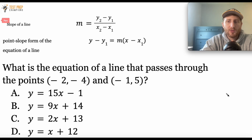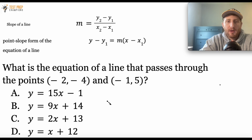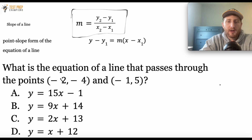Slope questions are very important for your test. Nobody can guarantee exactly which types of questions will show up, but there's a good chance you'll see some kind of slope question. For this one — what is the equation of a line — the first step is to calculate the slope using this formula. I'm going to look at the first pair, negative two and negative four, and label them: the first number is always an x, so negative two is x₁, and the second number is always a y, so negative four is y₁.